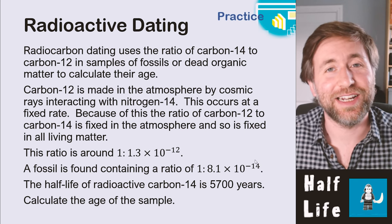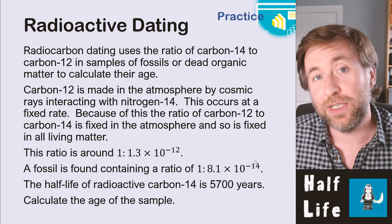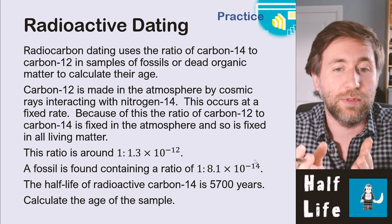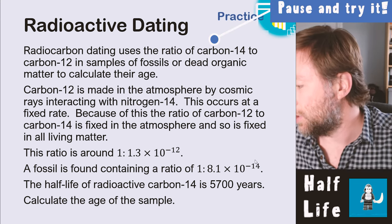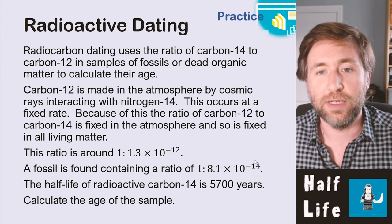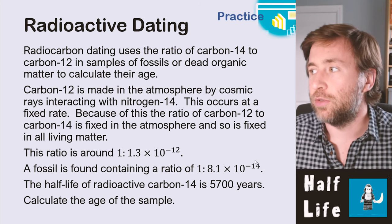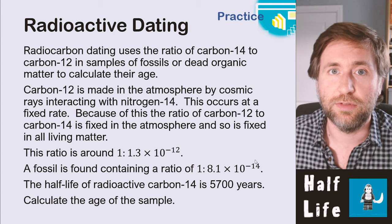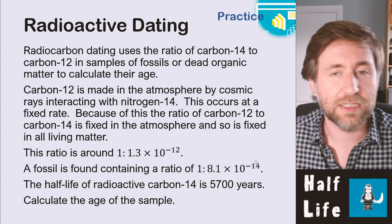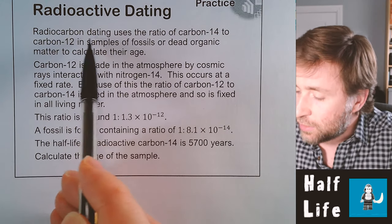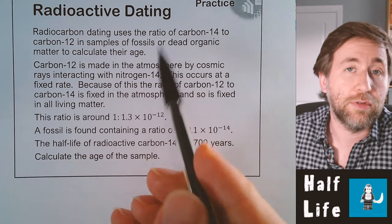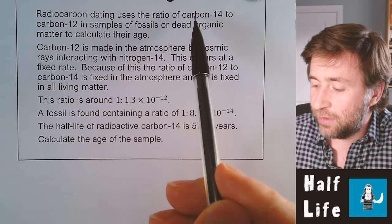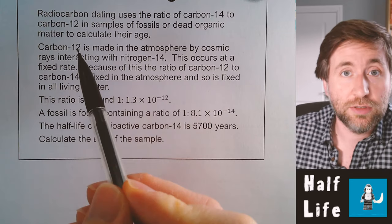Here's a legitimately harder question — it looks complex but is actually quite straightforward. Radiocarbon dating uses the ratio of carbon-14 to carbon-12 in fossils or dead organic matter to calculate their age. Carbon-14 is made in the atmosphere by cosmic rays interacting with nitrogen-14 at a fixed rate. The fixed ratio of carbon-12 to carbon-14 in the atmosphere — and therefore in all living matter — is 1 : 1.3 × 10⁻¹². A fossil is found with a ratio of 1 : 8.1 × 10⁻¹⁴. The half-life of carbon-14 is 5,700 years. Calculate the age of the sample.